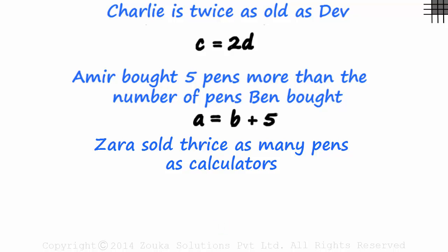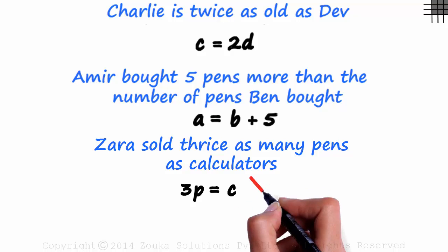Breaking the line down, we can write thrice as many pens as 3P. As many as calculators can be written as equal to C. Thrice as many pens as calculators, right? Sorry, that's incorrect.